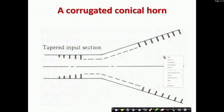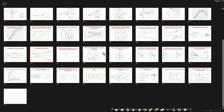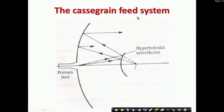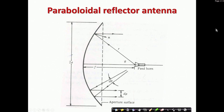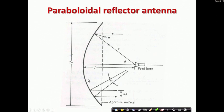Today we start with the reflector antenna. At microwave frequencies this is the mostly used antenna, and the majority of satellite links use these reflector antenna systems. The geometry of the reflector system is a paraboloid — a conic section obtained by revolving a parabola about its axis. The reflector is the paraboloid, and we have a feed horn at the focus of the paraboloid.